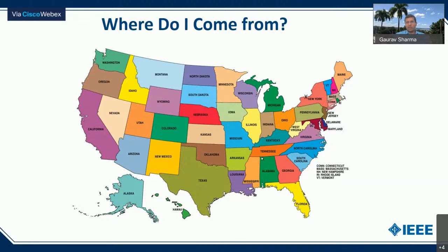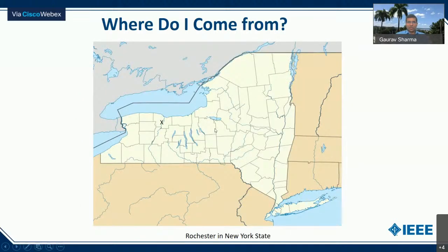Most people, when they think of New York, think of New York City. But Rochester is about 360 miles from New York City — a fair distance. The University of Rochester is located on the banks of River Genesee, which flows northward into Lake Ontario. Canada is on the north side, forming the boundary between the US and Canada in that region.